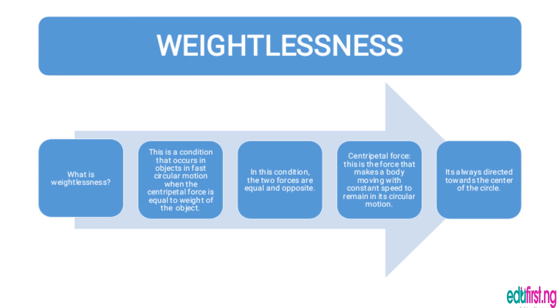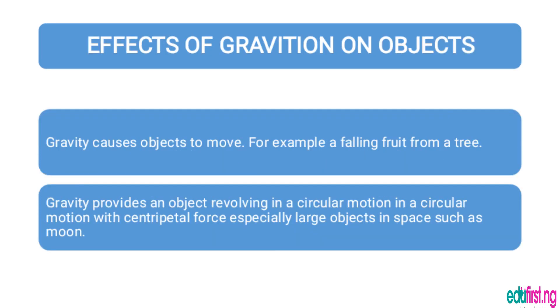Now what are the effects of gravitation on objects? Number one, gravity causes objects to move. For example, a falling fruit from a tree. Secondly, gravity provides an object revolving in a circular motion with centripetal force, especially large objects in space such as the moon.